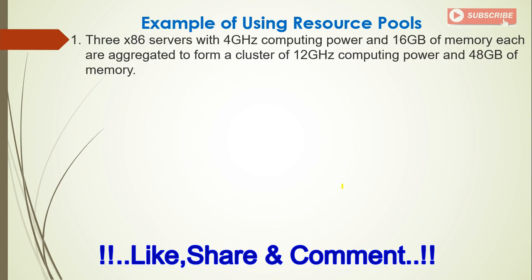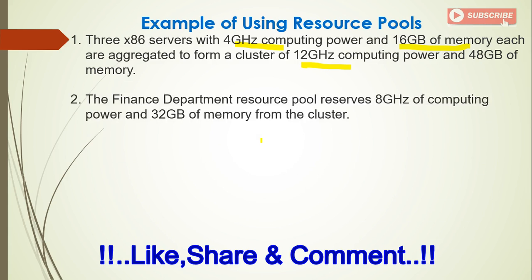Here's an example using a resource pool. Three 32-bit servers, each with 4 GHz computing power and 16 GB of memory, are aggregated to form a cluster of 12 GHz computing power and 48 GB of memory. The finance department resource pool reserves 8 GHz of computing power and 32 GB of memory from that cluster.